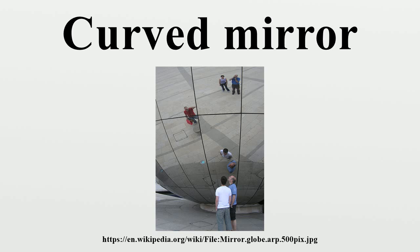Most curved mirrors have a spherical profile. These are the simplest to make, and it is the best shape for general purpose use. Spherical mirrors, however, suffer from spherical aberration. Parallel rays reflected from such mirrors do not focus to a single point.